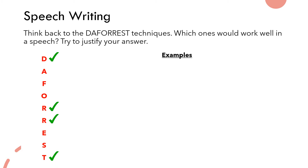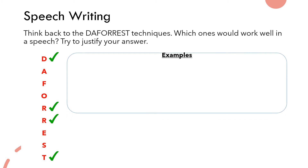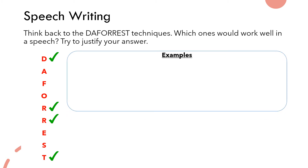The final technique I think is really important to use is a triplet, or group of three. This isn't one that specifically works well just for a speech — it will actually work well for a number of different forms of writing. The main reason I want to keep it in there is just because it's a really good technique. Even if you just think about using three adjectives, you can use some varied vocabulary there, and it can also help you to get a few marks as well.